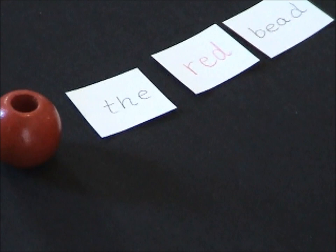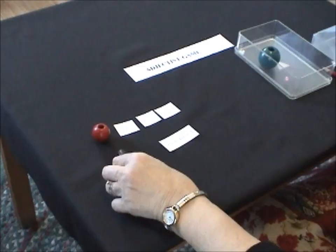Now we write another label and a child would read it, the bead. And the child is finding a bead in the box and it might be this one here.